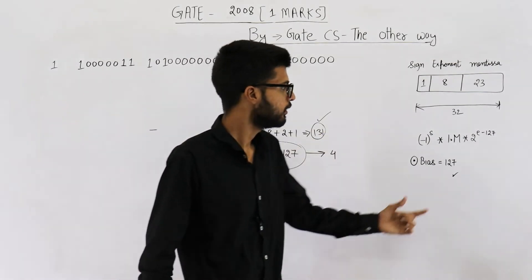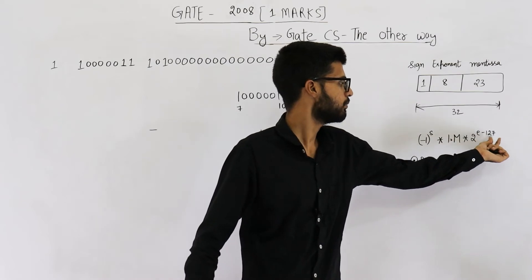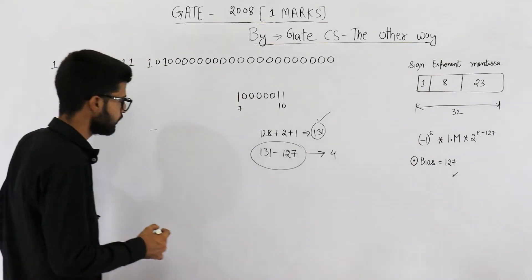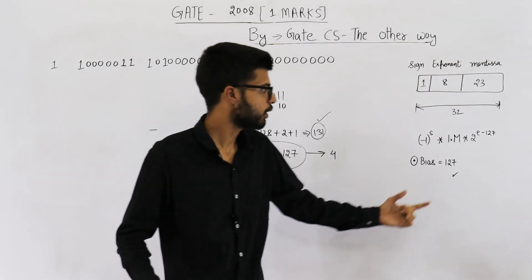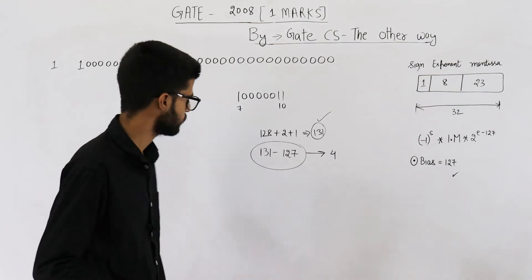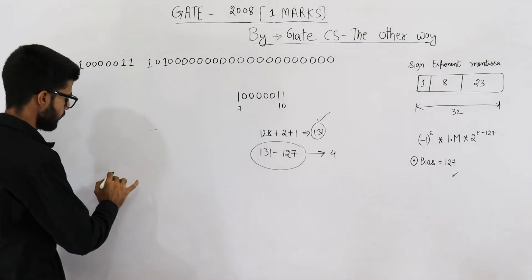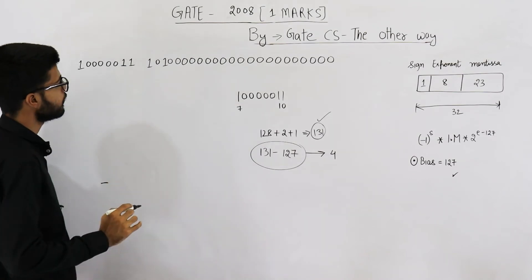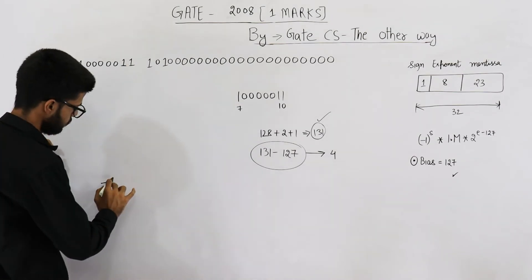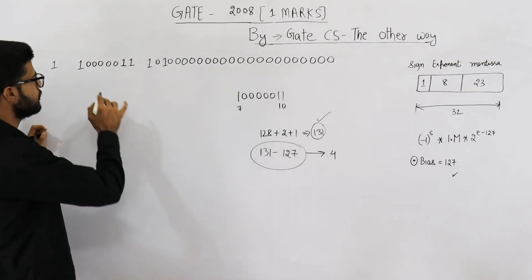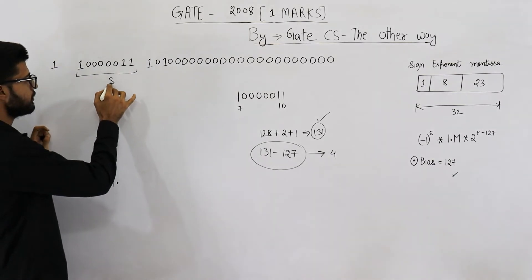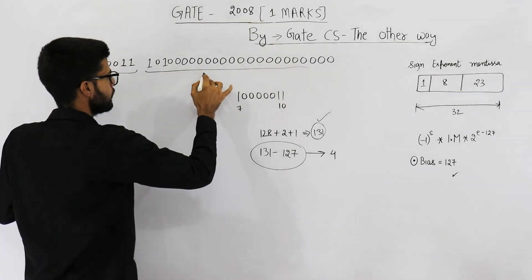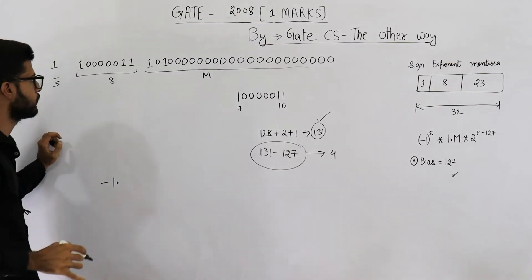See, even in the formula, we have 2 raised to the power e minus 127. So we have found out e minus 127 is 4. Let us now find out what is the value according to this formula. So it is minus 1 point M. M is all of these bits. These 8 bits, they are exponent. All of these bits, they are mantissa. And this is the assignment.